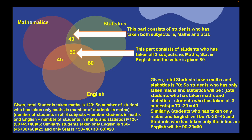Now, to find how many students took only Mathematics and no other subjects: we start with the total 120 students in Mathematics and subtract those in all 3 subjects, those in Mathematics and English, and those in Mathematics and Statistics. So the answer is 120 minus 30 plus 45 plus 40, which equals 5.